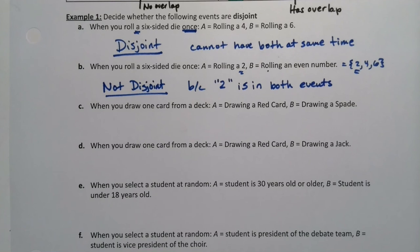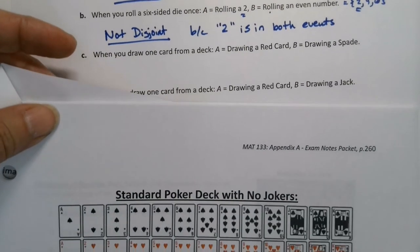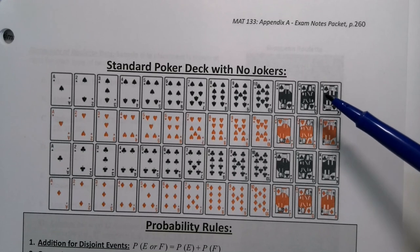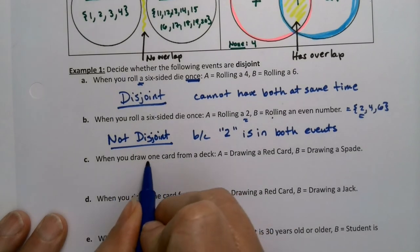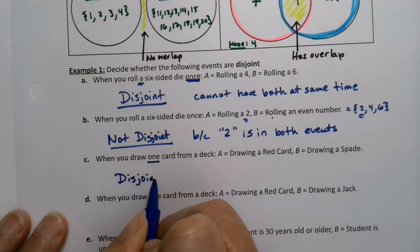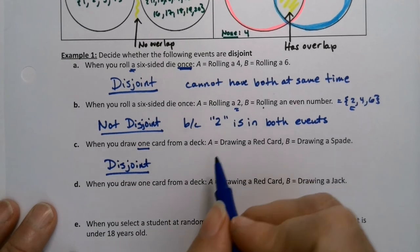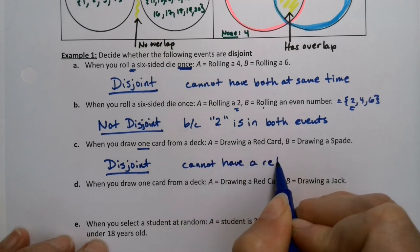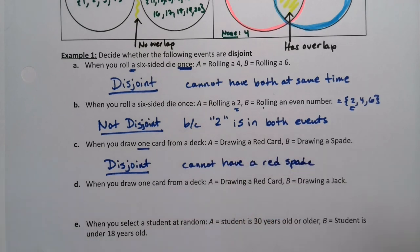What about when you draw one card from a deck, drawing a red card and drawing a spade? Red cards are hearts and diamonds. So if you draw one card, it can be red or it can be a spade, but you can't have both. There's no overlap there because spades are not red. So this is disjoint because you're only drawing one card. Cannot have a red spade. A red spade is impossible.